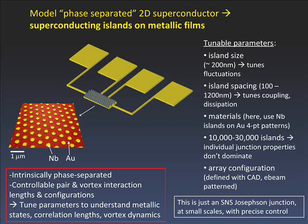We have many, many islands — 10 to 30,000 — so we're not dominated by individual junction properties; they average out to a homogeneous superconductor when we measure transport. We have total control over the array configuration: if someone said take out this one island out of 30,000, we can do that, because everything is just placed totally controllably. This is an intrinsically phase-separated system with really controllable pair and vortex interaction lengths and configurations, which we can use to tune parameters relevant to understanding metallic states, correlation lengths, or vortex dynamics.